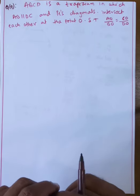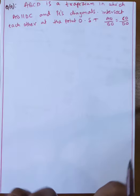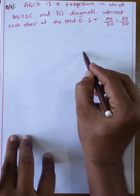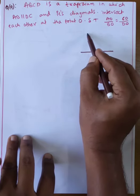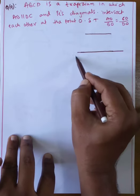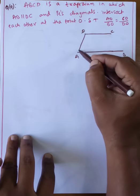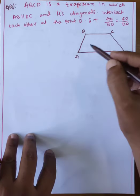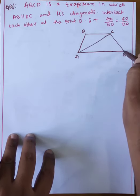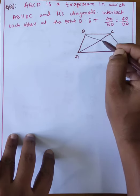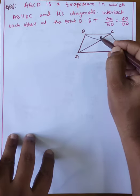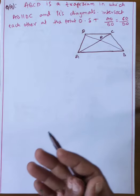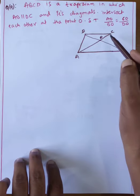ABCD is a trapezium in which AB is parallel to DC, and its diagonals intersect each other at point O. Show that AO by OB equals OC by OD. AB is parallel to DC is given. The diagonals intersect at O.